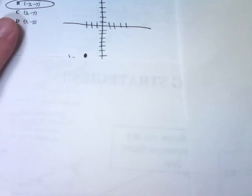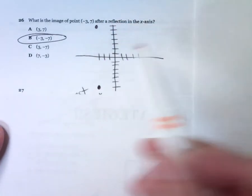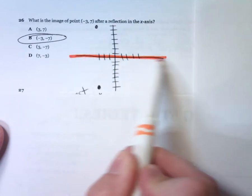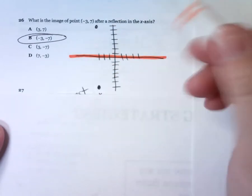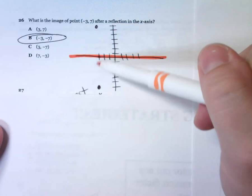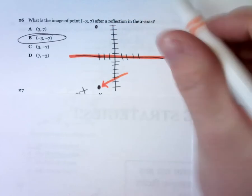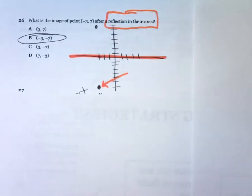Number 26 is a reflection in the x-axis. I drew another picture instead of following a rule. I plotted the point negative 3, 7 — go left 3 and up 7. To reflect in the x-axis, I count how far down it is until I land on the x-axis: down 7. Then go down 7 again, and you've got your reflection point, which is negative 3, negative 7.